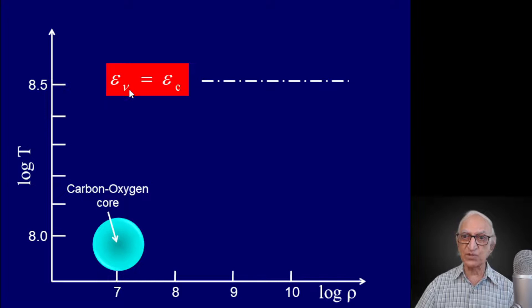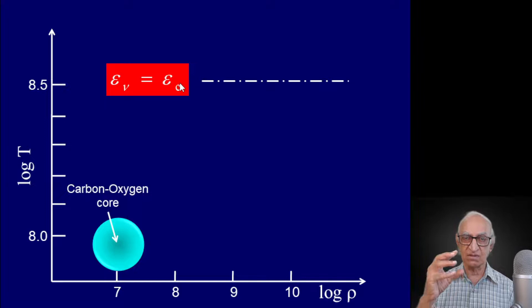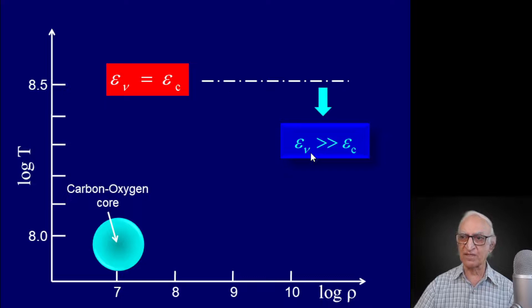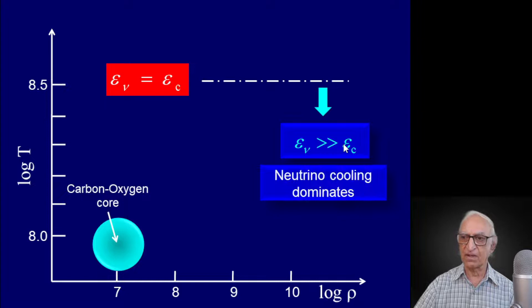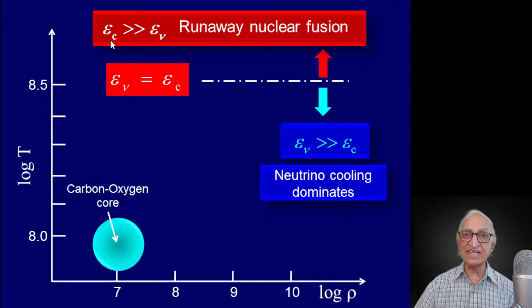The significance of that horizontal line is the following: this is the temperature at which the cooling due to neutrinos becomes roughly equal to the heating due to conduction of the core. Below the line, cooling due to neutrinos is much greater than the increase in temperature due to heat conduction — neutrino cooling dominates. Above that horizontal line, the increase in temperature due to heat conduction from the outside furnace becomes larger than the cooling due to neutrinos, and there will be a runaway nuclear fusion.